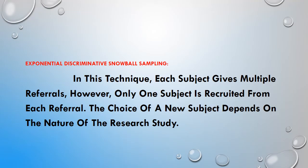The third type is exponential discriminative snowball sampling. In this type, each subject gives multiple referrals; however, only one subject is recruited from each referral. The choice of a new subject depends on the nature of the research study. So one sample represents two referrals, but only one of those two persons will be a respondent and provide further referrals. From that person, we again get two more referrals, but again only one will be a respondent.